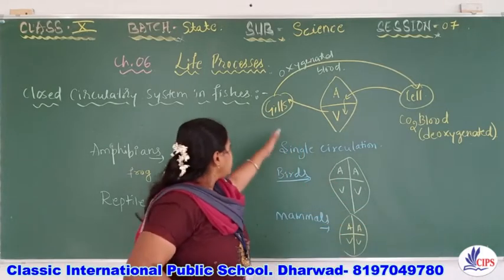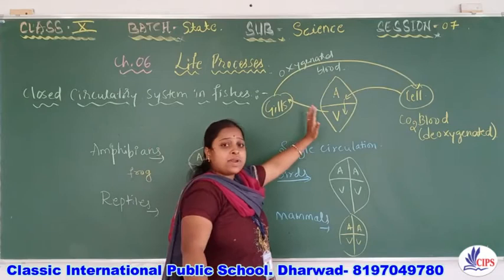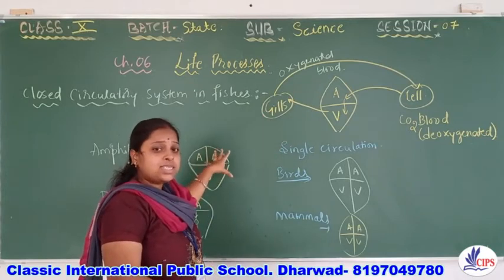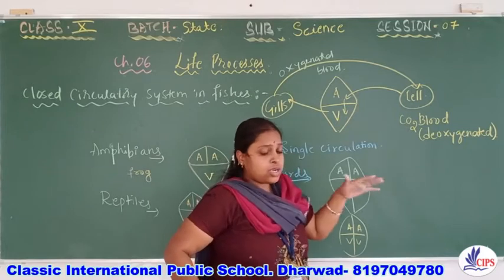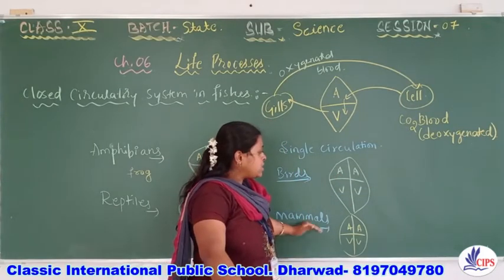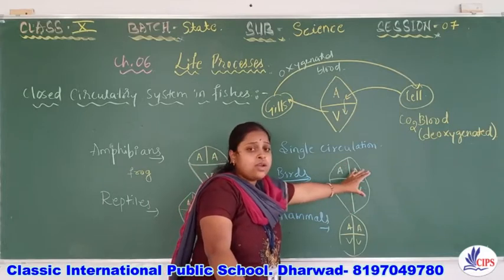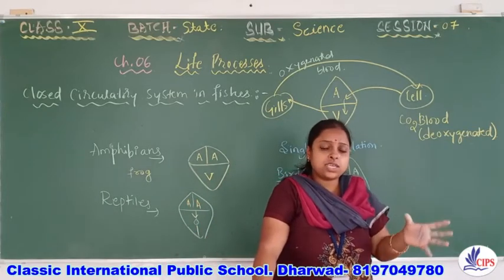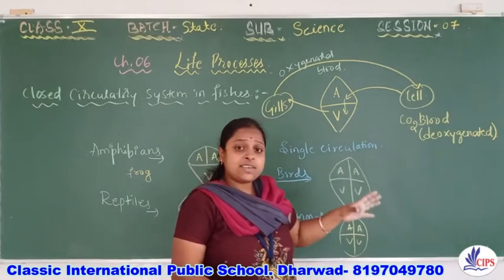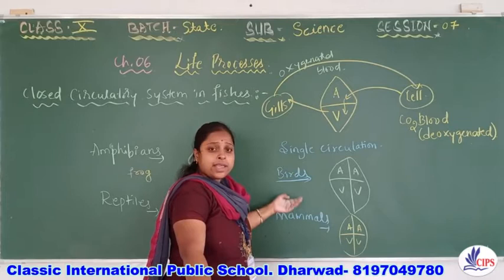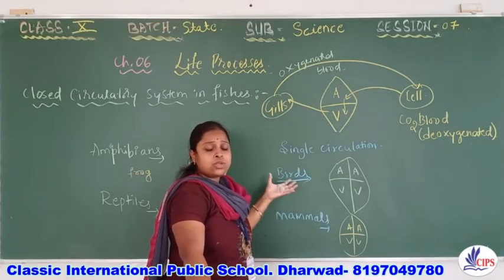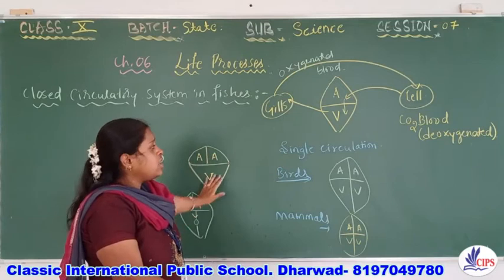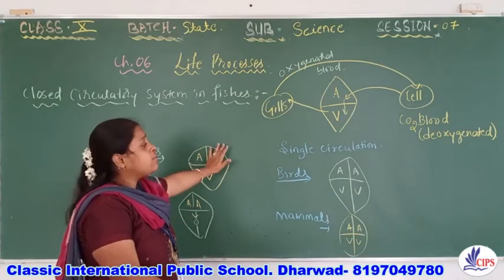In fishes and lower organisms there is mixing of oxygenated and deoxygenated blood — no separation. Whereas in birds and mammals there is complete separation of deoxygenated and oxygenated blood, because it is very necessary to supply an efficient amount of oxygen to every cell of the body. Birds and mammals are higher organisms needing more energy for their activities, which is why they have a four-chambered heart, while lower organisms have two, three, or incompletely four-chambered hearts.